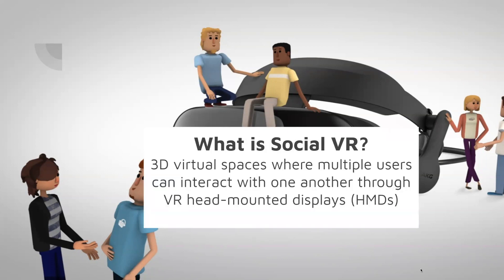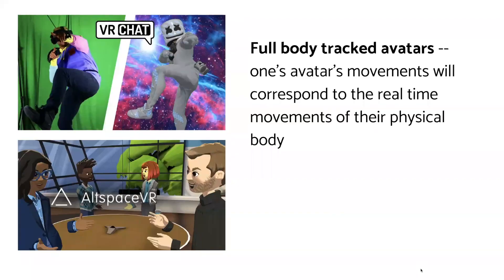So, what is social VR? Social VR refers to 3D virtual spaces where multiple users can interact with one another through VR head-mounted displays. In social VR, people can create, craft, and customize full-body tracked avatars to interact with others. That means one's avatar body actions would correspond to their physical body actions in real time.